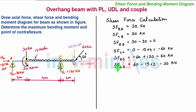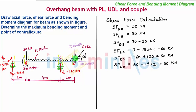We can verify this answer by considering the right-hand side of the section. The only vertical forces on the right-hand side are the downward force of magnitude 60 sin 60, whose value is 30 kN. A downward force on the right-hand side of a section is positive, so we get the same positive 30 kN shear force at this section, verifying the answer.